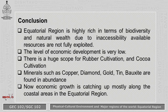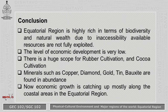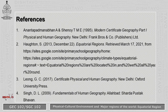To conclude, the equatorial region is highly rich in terms of biodiversity and natural wealth. But due to inaccessibility, the resources are not fully exploited, and as a result the level of economic development is very low. There is huge scope for rubber and cocoa cultivation, and efforts in Malaysia have been very successful. The region also houses important minerals such as copper, diamond, gold, tin, and bauxite in abundance. In the 21st century, economic growth is catching up, mostly along coastal areas. The equatorial region is a very important and potential region for future economic growth. These are some references you can go through to update your understanding of this subject.